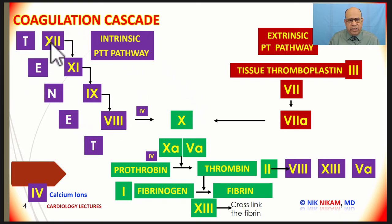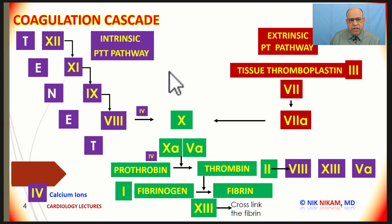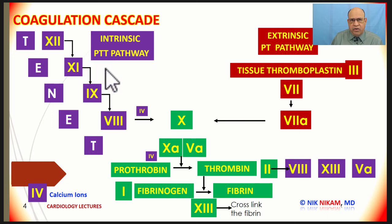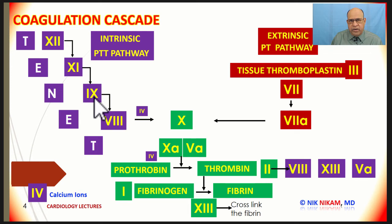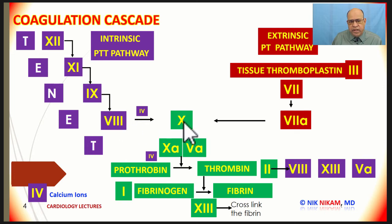The intrinsic pathway is depicted here in purple. It is activated whenever there is trauma to the arterial lining inside the body. Disruption of the endothelium sets off the platelet plug formation, then triggers the intrinsic pathway. It starts with factor 12, which acts upon factor 11 and converts it into factor 11a. Factor 11a and 12a are all active factors compared to their inactive forms. This active form of factor 11 then acts on factor 9 and converts it into factor 9a.